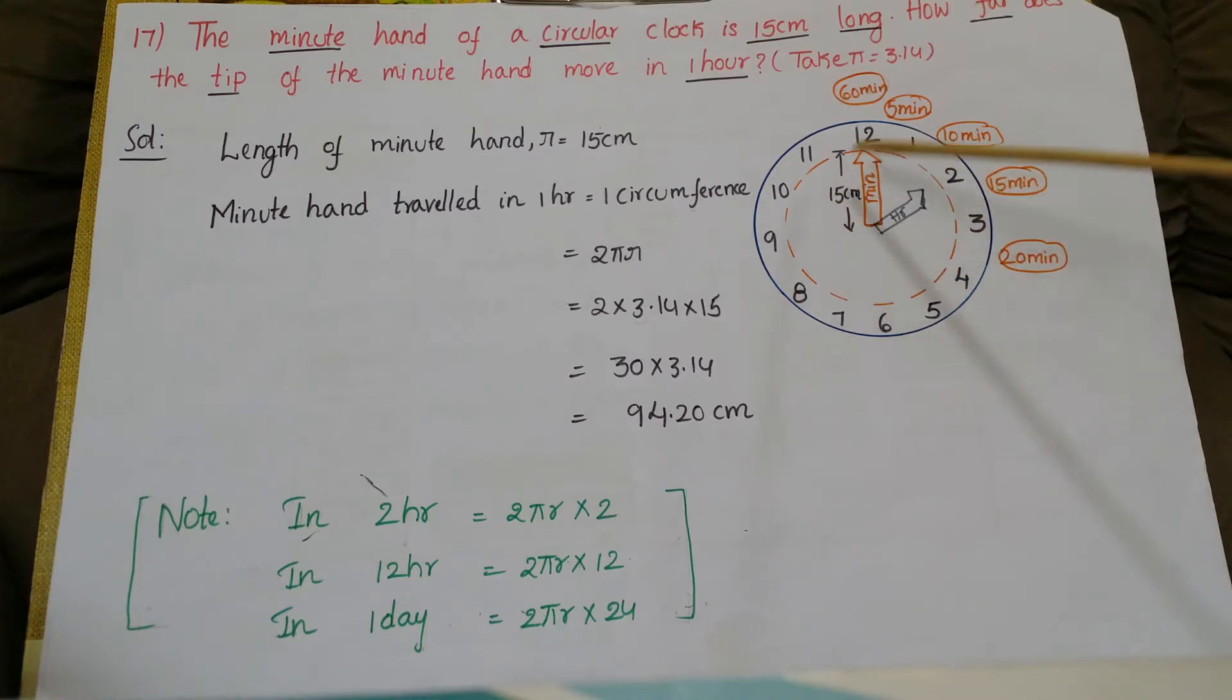So suppose if they ask in two hours, we just multiply this 2πr with 2. Suppose we want in 12 hours, just multiply the circumference with 12. Suppose for one day, we just multiply for one day means 24 hours, so multiply the circumference with 24.